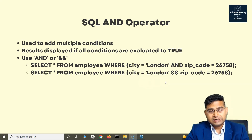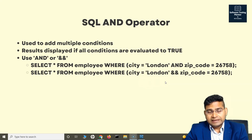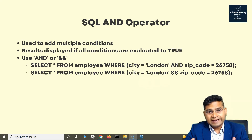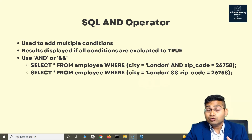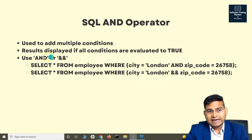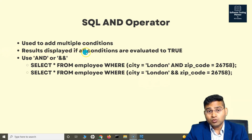We have understood that we can use a condition with the WHERE clause — where something is true, the results are returned accordingly. Now with the AND clause, we can use multiple conditions, and when all of them are evaluated to true, the result is returned to the user. Results are displayed only if all the conditions are evaluated to true.